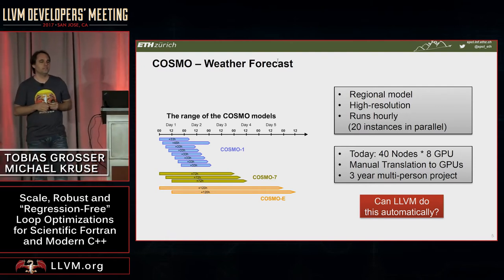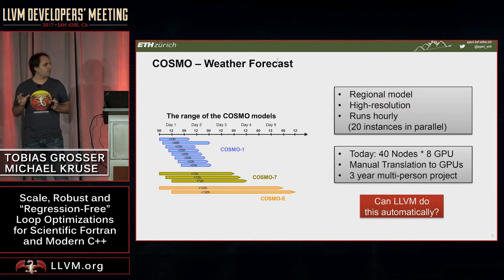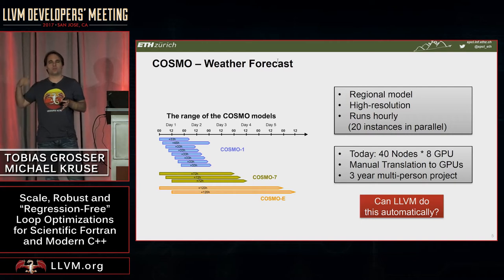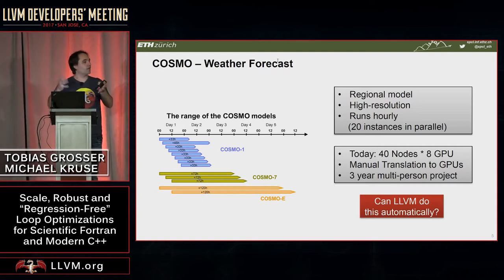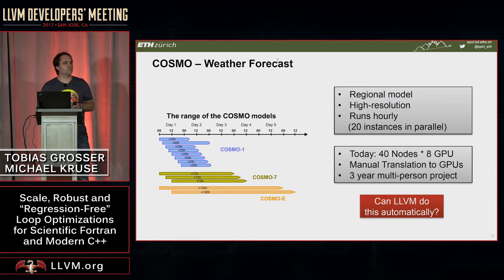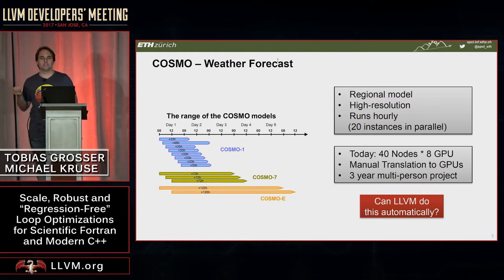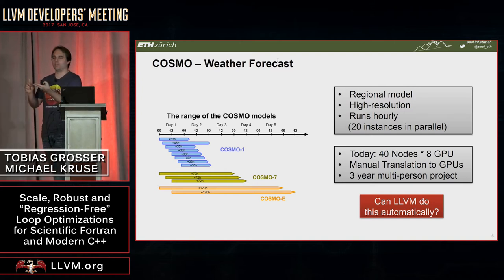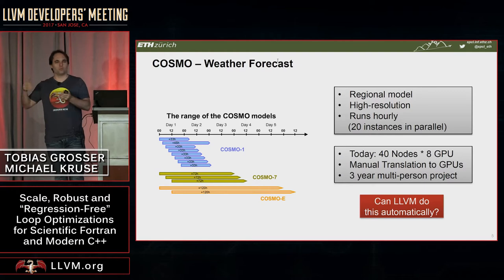Since April last year the Swiss weather model has been running on GPUs. This was a big multi-year, multi-person project, giving around a 4.3x speedup over the parallel CPU version. With the new hardware we improved performance by a factor of 20, which allowed us to run 20 forecasts and get better precision. Unfortunately there's a huge codebase and it's a huge financial investment to offload this to GPUs. Not every country wants to run on GPUs, so we now have multiple codebases: one for NVIDIA GPUs, one for Xeon Phi, and another for CPUs.